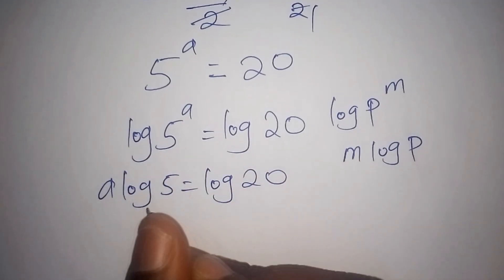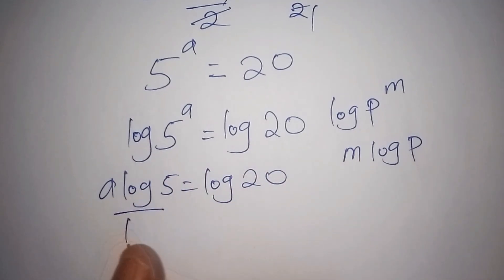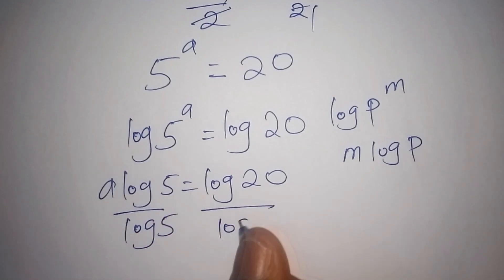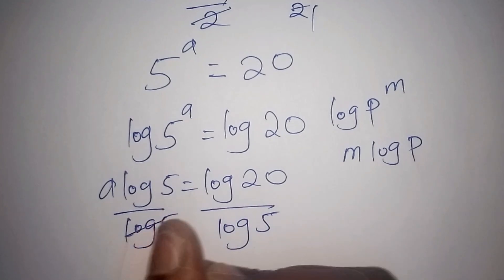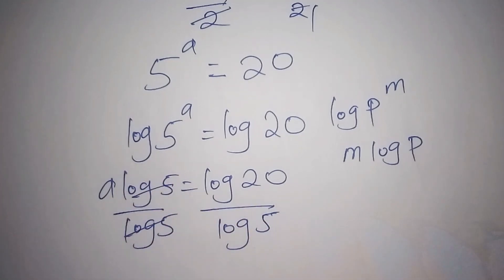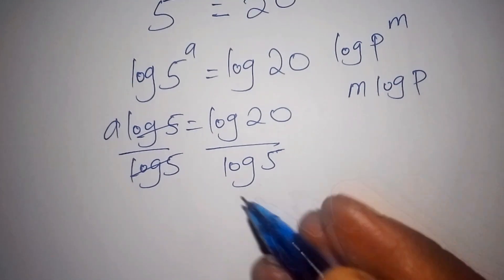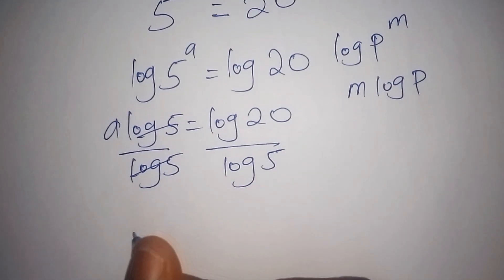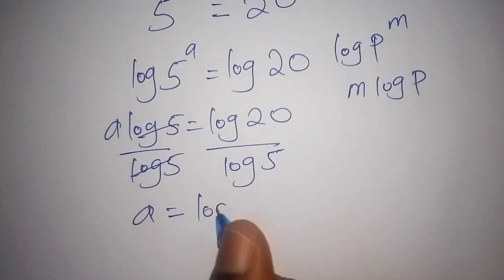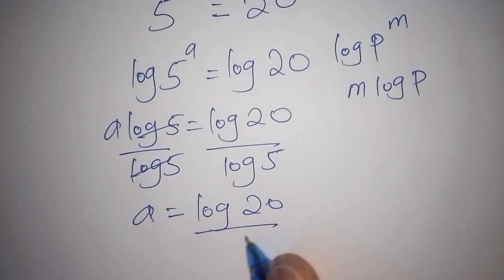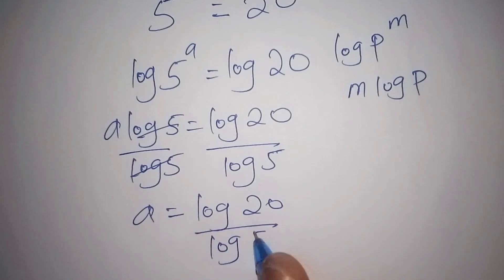From here, we shall divide both sides by log of 5, so that log 5 and log 5 cancel each other. Now we shall have A equals to log of 20 all over log of 5.